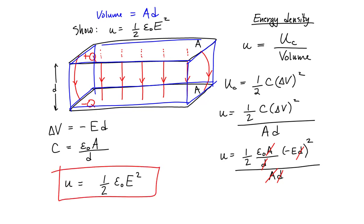What this reveals is that the capacitor — the electric field established by the plates — stores energy, and the amount of energy per volume is based strictly on the magnitude of that electric field. If you double the electric field, your energy density goes up by four. If you triple the electric field, your energy density goes up nine times. You pack a lot of energy with a small amount of electric field. And even though we showed this result for a parallel plate capacitor, it happens to be true for any electric field: the energy density, the energy per unit volume, is equal to one-half times the permittivity of free space times the magnitude of the electric field squared.